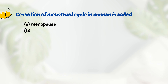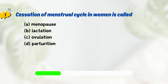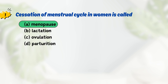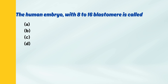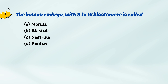Cessation of menstrual cycle in women is called? The human embryo with 8-16 blastomeres is called?